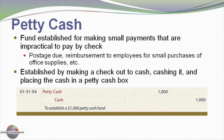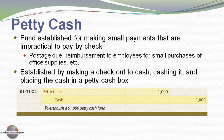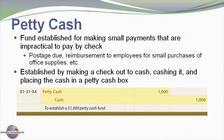When a petty cash fund is initially established, it's done so by crediting cash — here's the $1,000 credit to cash — and we debit petty cash. These are both cash accounts on the general ledger; it's just that the petty cash account now reflects a subdivision of cash into a second account.